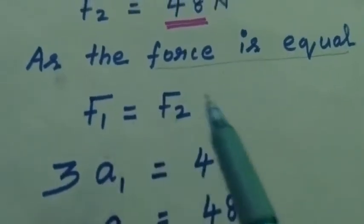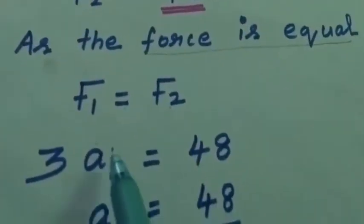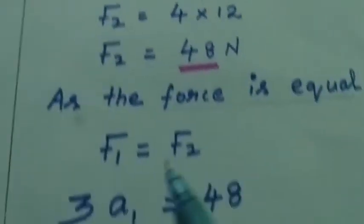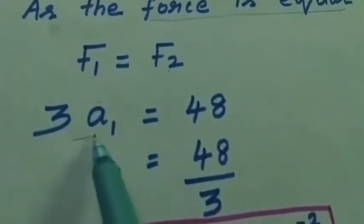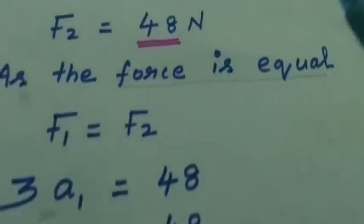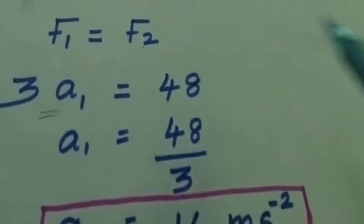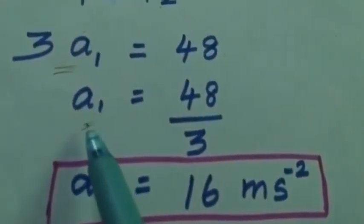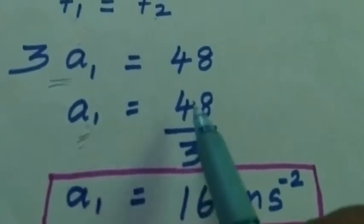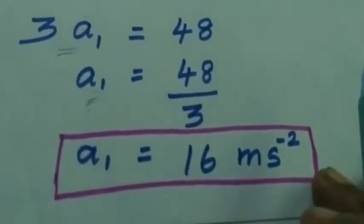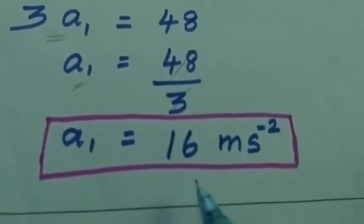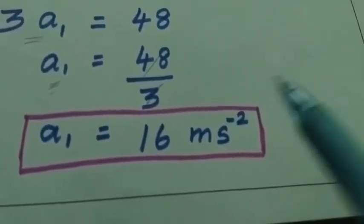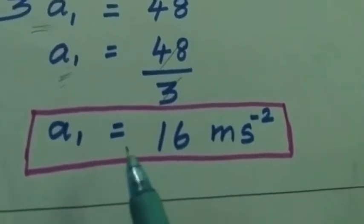f1 equal to f2. So we apply f1 equal to 3 into a1, and f2 force equals 48 newton. In this question we have to find acceleration. So a1 equal to 48 divided by 3. If we cancel, we get a1 equal to 16 meter per second square. So this is the acceleration of mass m1.